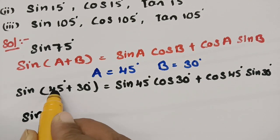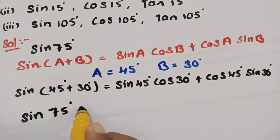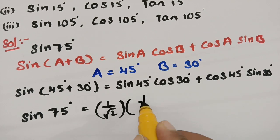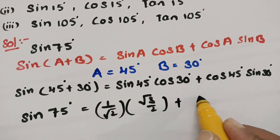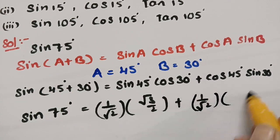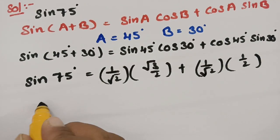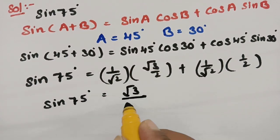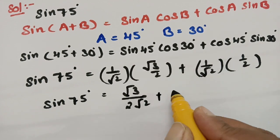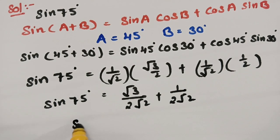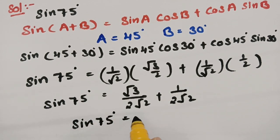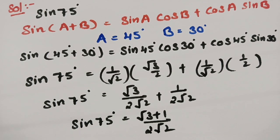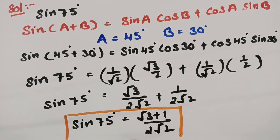Sin of 45 plus 30 degrees is nothing but 75 degrees. Sin 45 is 1 by root 2, and cos 30 degrees is root 3 by 2, plus cos 45 is again 1 by root 2 and sin 30 degrees is nothing but half. So sin 75 degrees is equal to, if I multiply the numerators, this will be root 3 by 2 root 2. So sin 75 degrees is equal to root 3 plus 1 by 2 root 2.